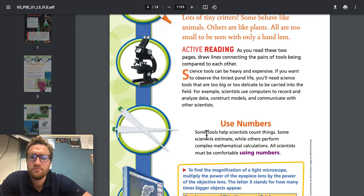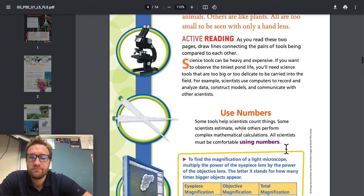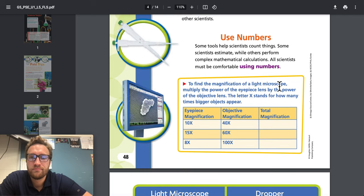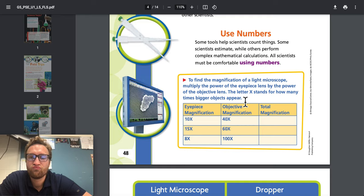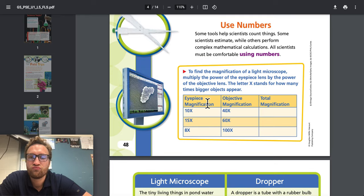Use numbers. Some tools help scientists count things. Some scientists estimate, while others perform complex mathematical calculations. All scientists must be comfortable using numbers. To find the magnification of a light microscope, multiply the power of the eyepiece lens by the power of the objective lens. The letter X stands for how many times bigger objects appear. Eyepiece magnification 10 times, objective magnification 40 times, total magnification. Eyepiece magnification 15 times, objective magnification 60 times.